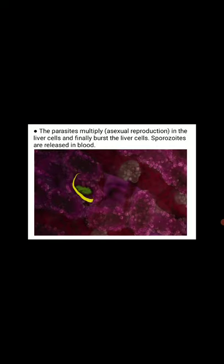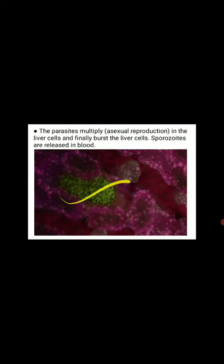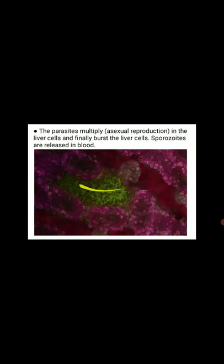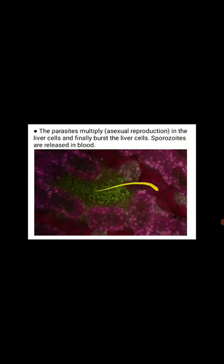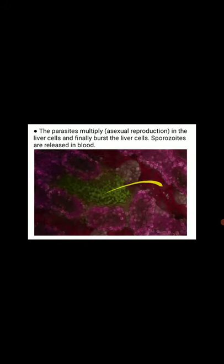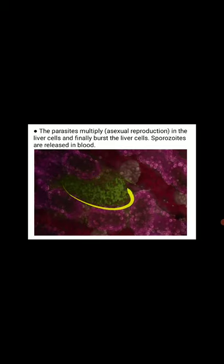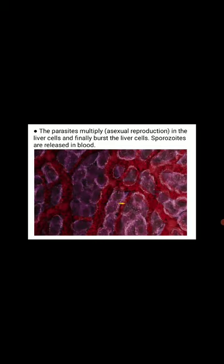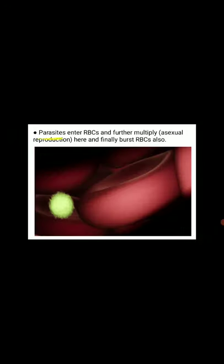Inside the infected liver cells, the parasite reproduces asexually. Here we can observe how it infects the liver cell and multiplies to release sporozoites. The sporozoites enter the liver cells and merozoites are released by bursting the hepatic cells.